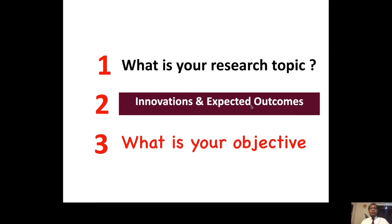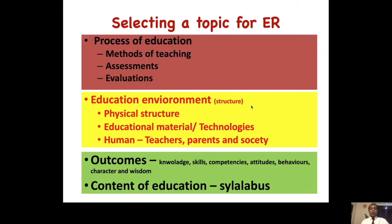We have already done selecting your research topic and innovations. Today we focus on your objective. Selecting a topic can be in all three areas: the process of education, education environment, and outcomes. The process involves methods of teaching — whether you are adopting learner-centered or activity-based teaching — how to engage students, enhance teaching effectiveness, make them creators, induce creative thinking, and expand teaching into competencies, character building, and wisdom.